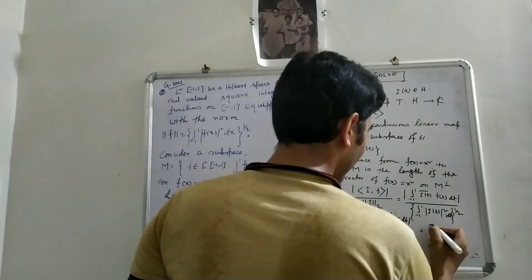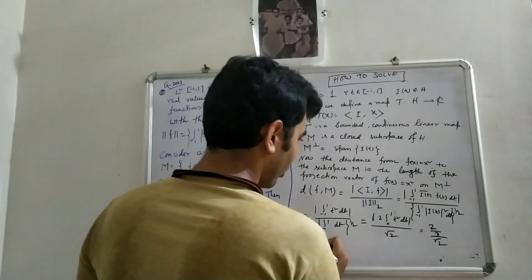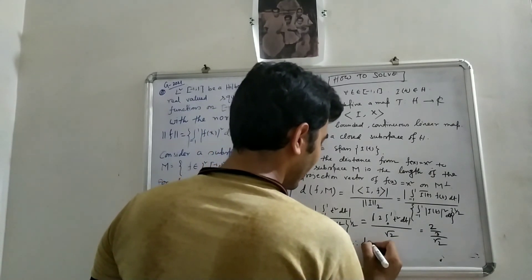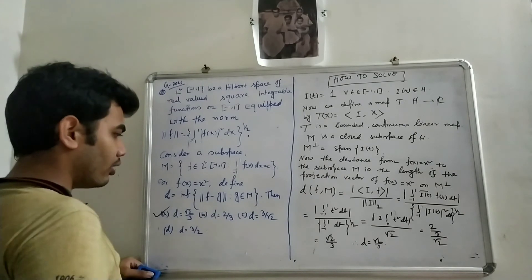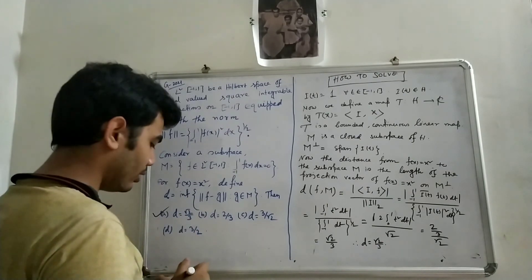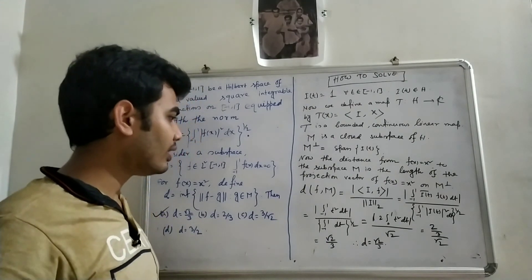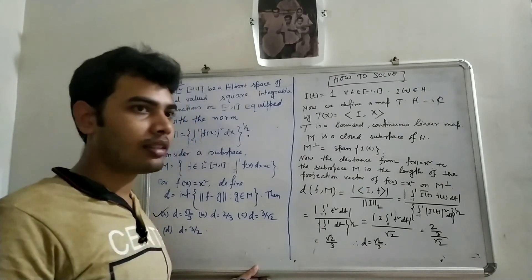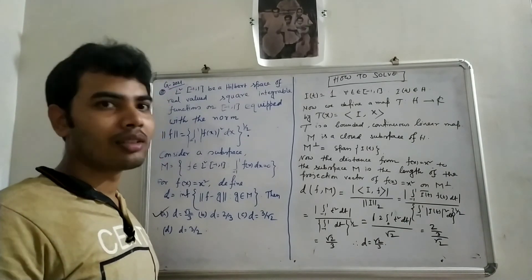So d = (2/3) / √2 = √2/3. Therefore d = √2/3, which matches the first option. I hope you got the idea. If you have any problem, write in the comment box and I'll try to help. If you like the video, please share and subscribe to my channel. Thank you very much.